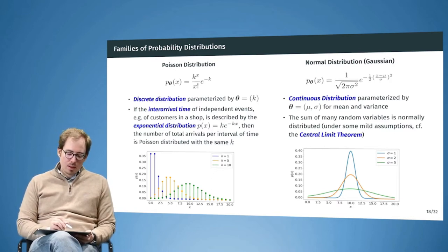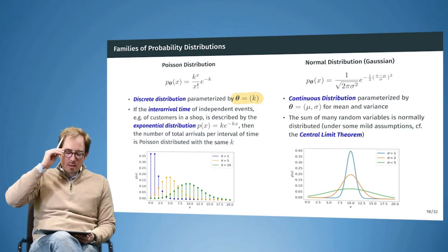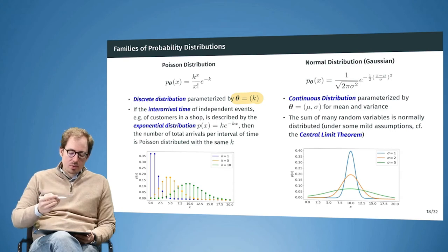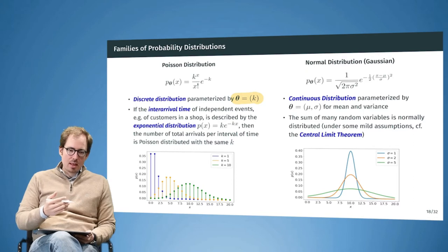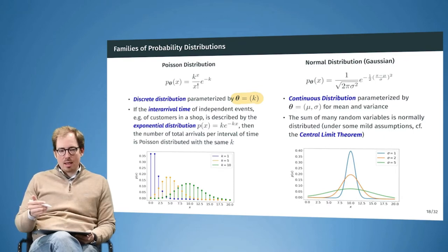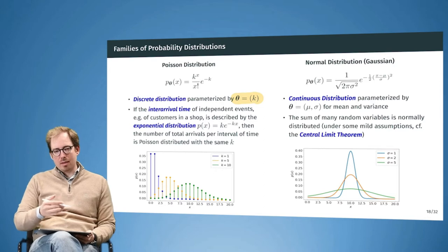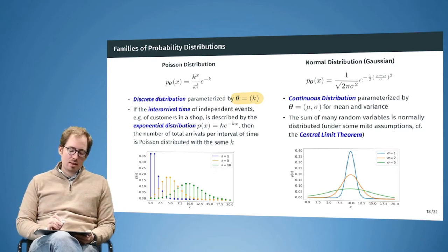For the Poisson distribution, which is a discrete distribution, the parameter vector theta has only one element which we call k. The Poisson distribution is often used to compute the number of events happening in a certain amount of time. Think about a shop with customers arriving — normally customers are independent from one another, so one person being there is not the reason another is there.